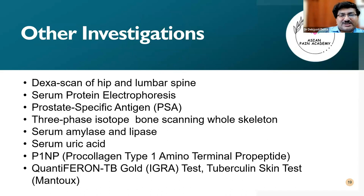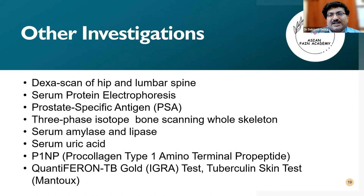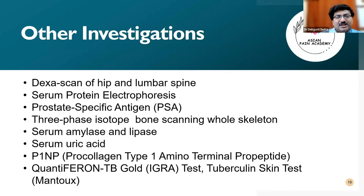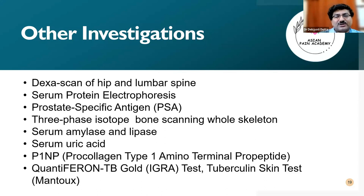These are other miscellaneous investigations sometimes prescribed. DEXA scan for the hip and lumbar spine, to find out if the patient has osteoporosis. Serum protein electrophoresis, if suspecting an increase in M protein or monoclonal antibody. PSA testing. Isotope bone scanning of the skeleton. These can be helpful in different situations. Serum amylase and lipase for a case of chronic pancreatitis. Vitamin D, as already mentioned. P1NP — mainly for osteoporosis prognosis and management when going for osteoporosis therapy. QuantiFERON-TB Gold test and tuberculin skin test — these should be checked before giving biologics.